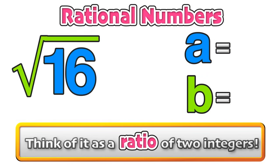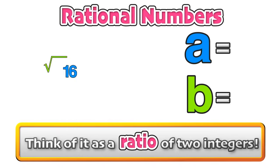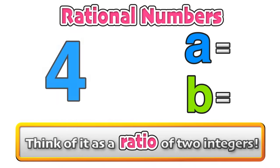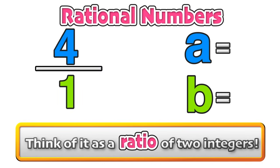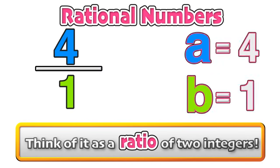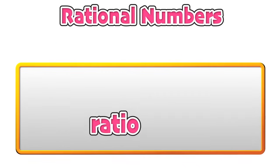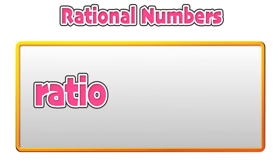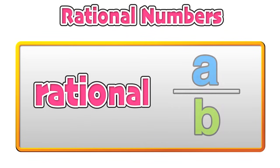Now we'll take a look at the square root of 16. We know that 16 is a perfect square, and that the square root of 16 is equivalent to 4, which can be written as 4 over 1, so again it can be expressed as a ratio where a is 4 and b is 1. The word ratio should tip us off to rational, a number that can be expressed as a fraction of two integers.